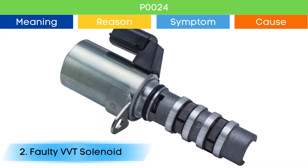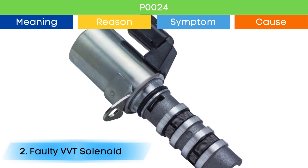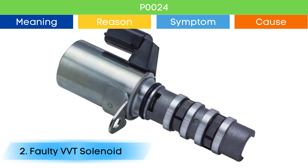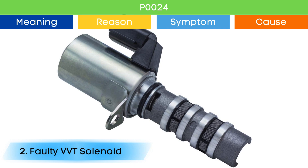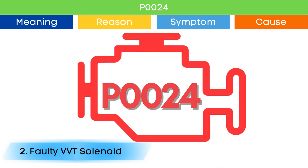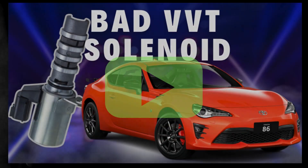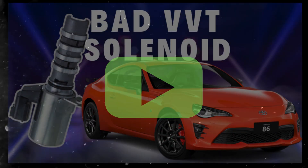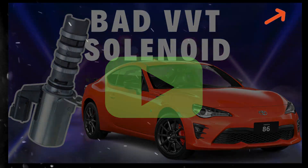Link in the corner. Cause number two: bad VVT solenoid. Due to a bad VVT solenoid, the camshaft position advance and delay may not work properly, which may trigger P0024 and other OBD2 codes related to VVT solenoid, along with symptoms of a bad VVT solenoid. Check our detailed video to learn more about the symptoms of a bad VVT solenoid and related OBD2 codes. Link in the corner.